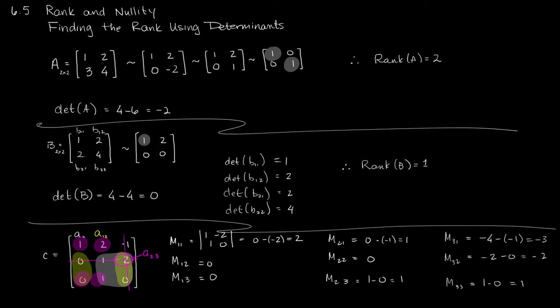I have found all of these minor values. The good news is that since I've found one that is not zero, I can say — using a different color — the rank of this matrix is the dimension of this 3 by 3 matrix. Whether I consider the number of rows or columns, they're both 3, so the rank is 3.